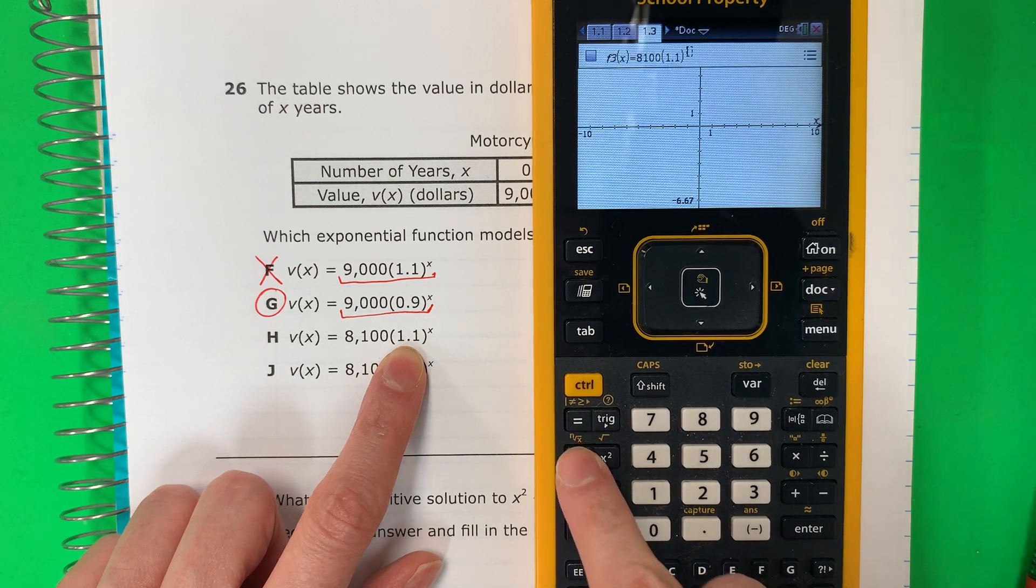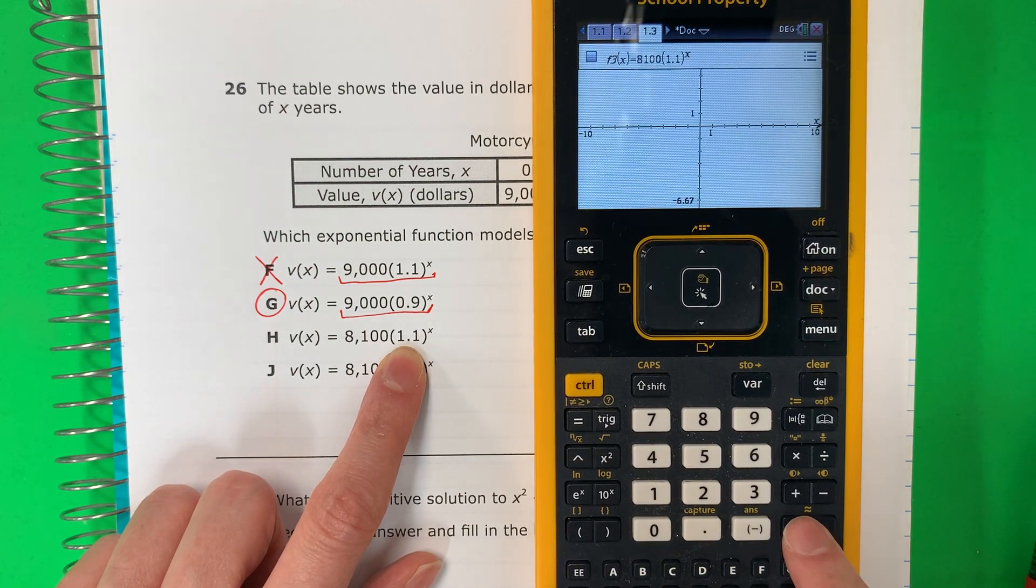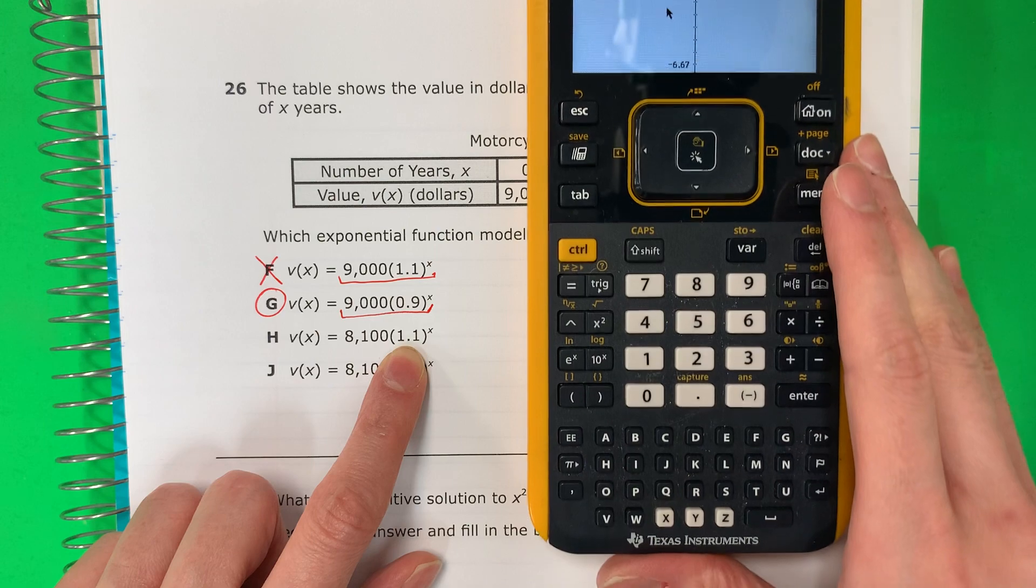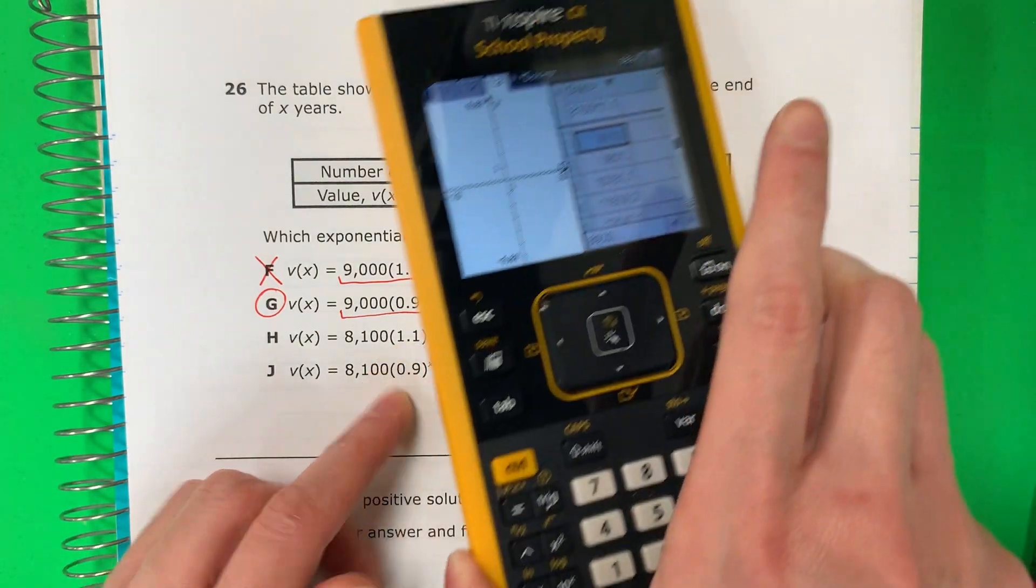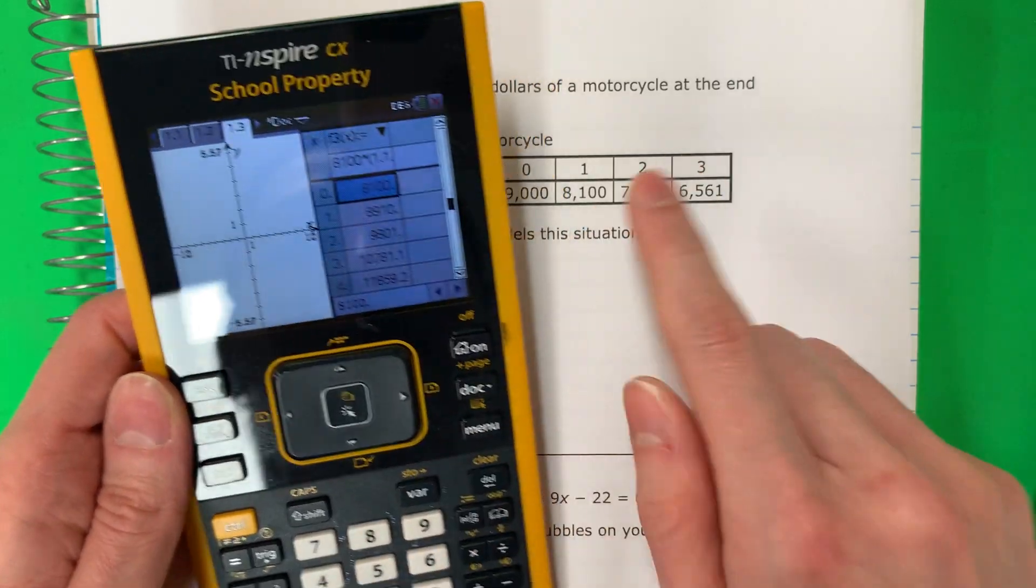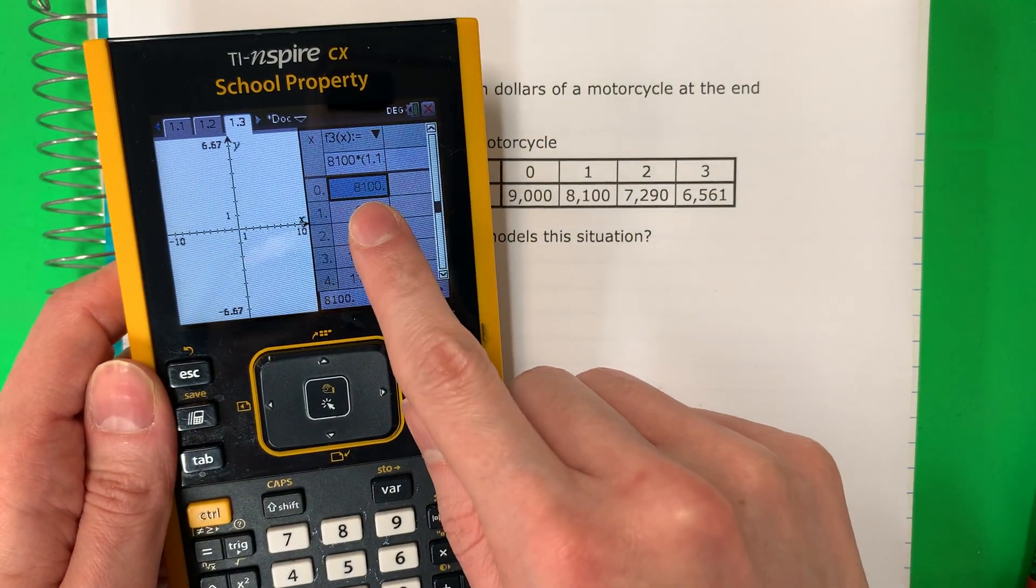Exponent. X. Enter. You're going to do control T. We go up one. Arriba una. Okay. Zero. 8,100.